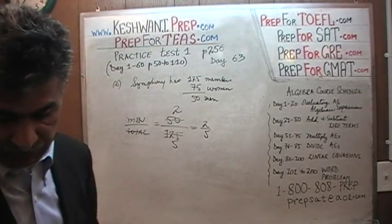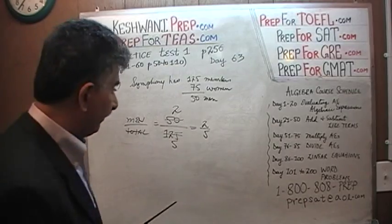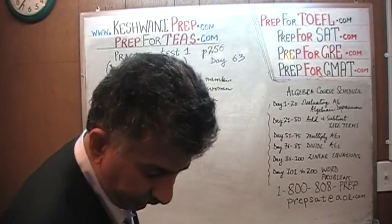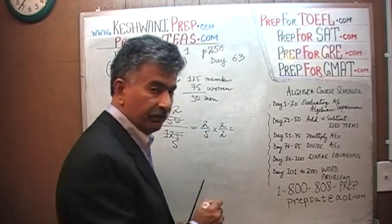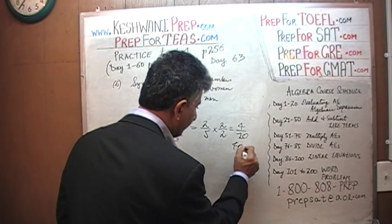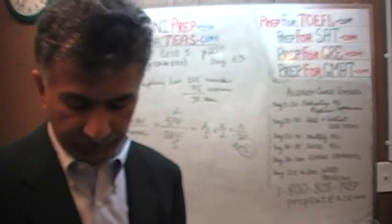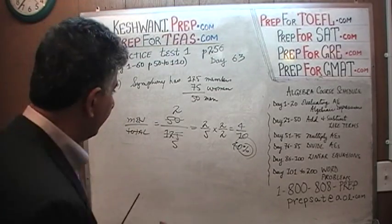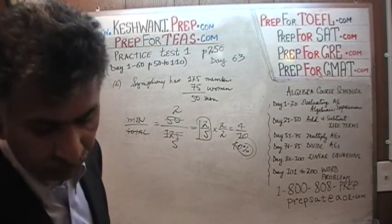Now on the other hand, if they had asked us what percentage of the symphony is men, we would have done the same work except at the end we would have realized that two fifths is the same as four over ten — multiply top and bottom by two — and that would have been 40%. You have to know your fifths, you have to know your tenths. They are not looking for percentages, they are looking for the ratio, and the ratio is two fifths. The answer is A.